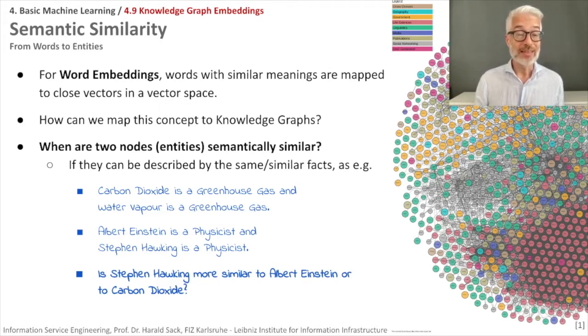When are two nodes or two entities semantically similar? Think in terms of knowledge graphs. They might be similar if they are described by the same or similar facts. Simple example: let's take carbon dioxide and water, both of them are greenhouse gases, which means they share a property. Or take Albert Einstein and Stephen Hawking, both have been physicists. The question now is: is Stephen Hawking more similar to Albert Einstein or more similar to carbon dioxide?